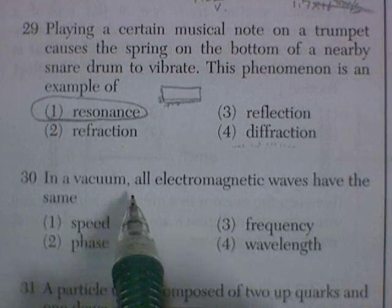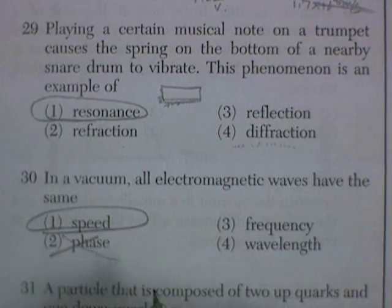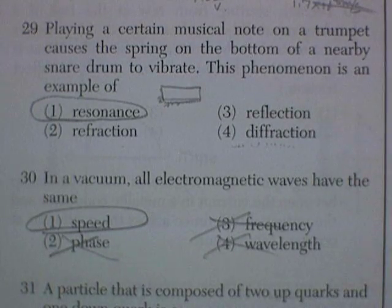30. In a vacuum, all electromagnetic waves have the same speed. Certainly not phase, certainly not frequency or wavelength. So, it's got to be speed.